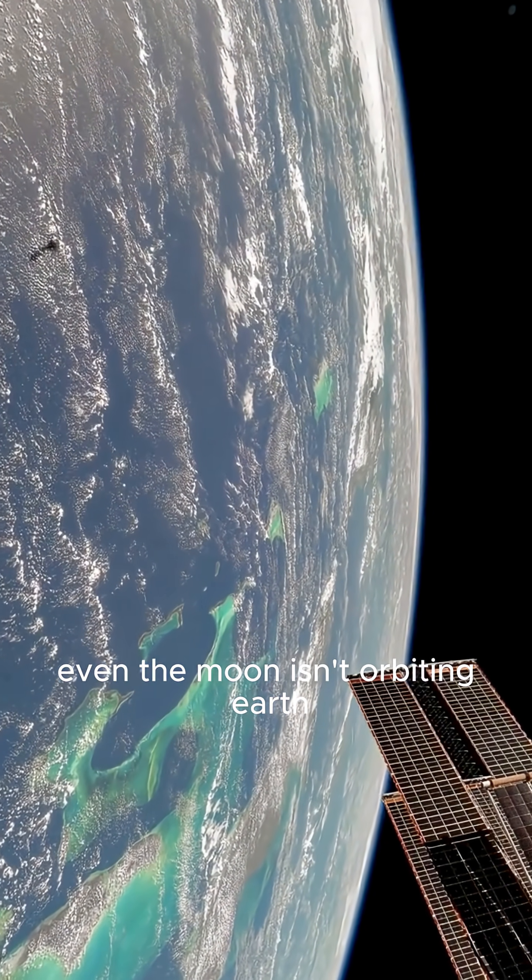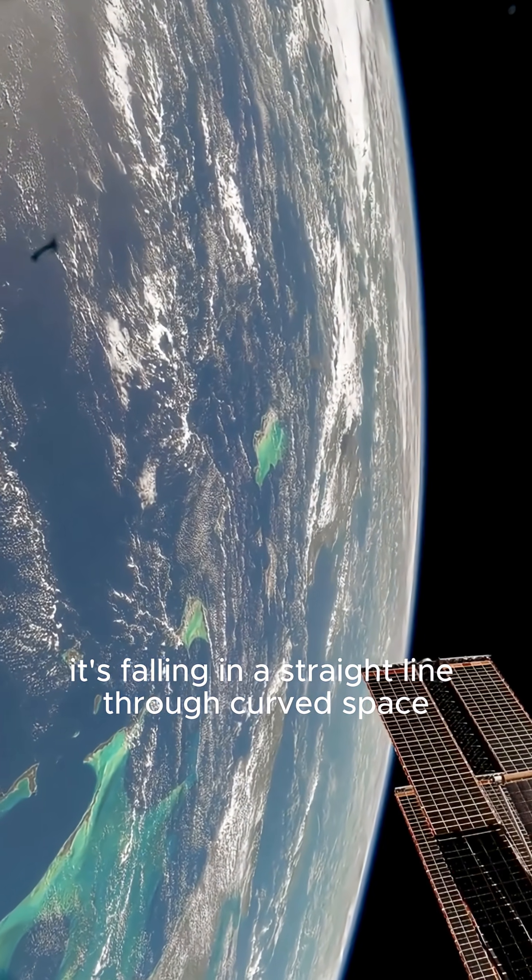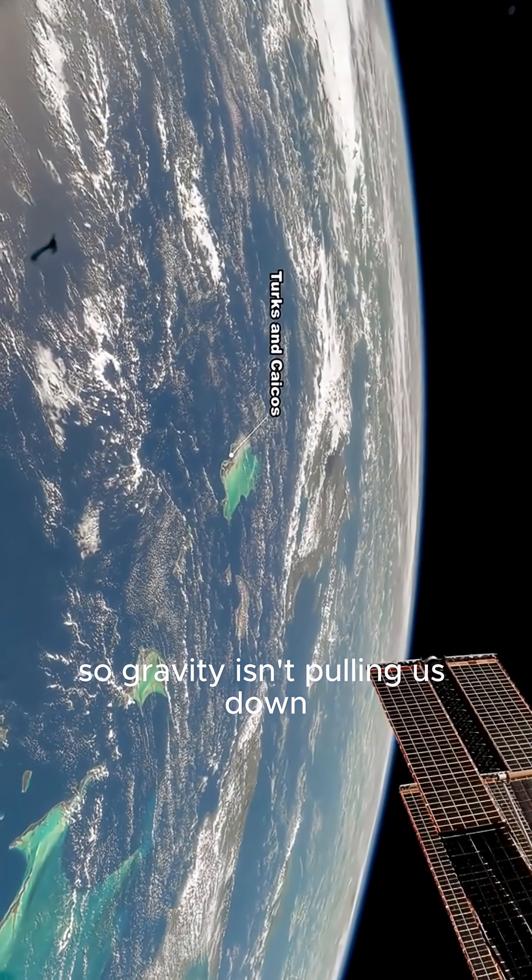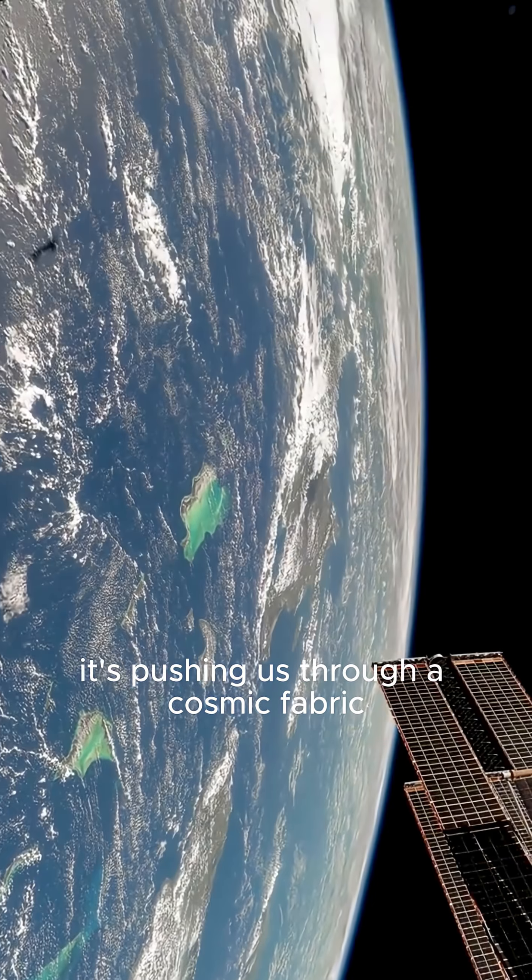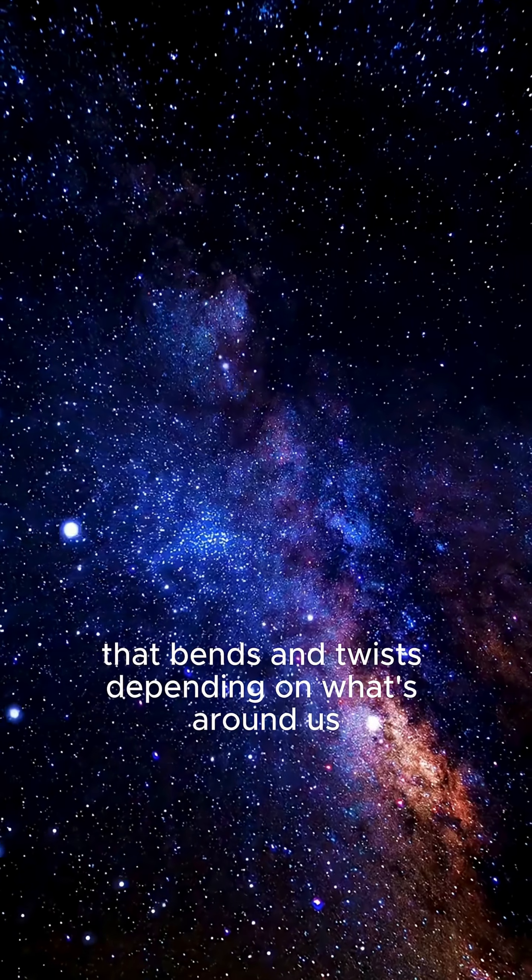Even the moon isn't orbiting Earth because it's being tugged. It's falling in a straight line through curved space. So gravity isn't pulling us down. It's pushing us through a cosmic fabric that bends and twists, depending on what's around us.